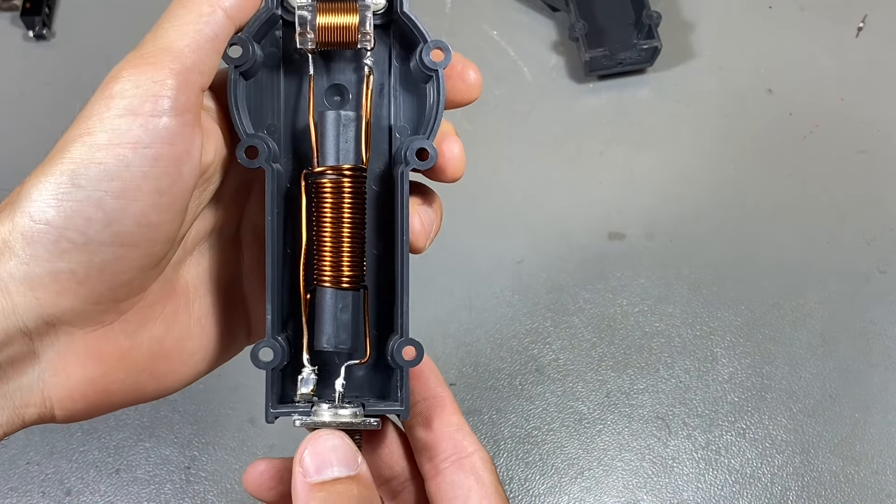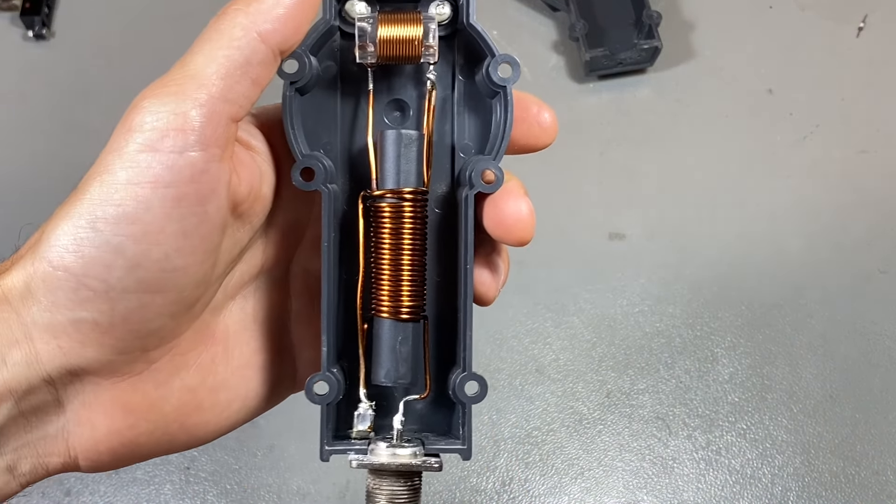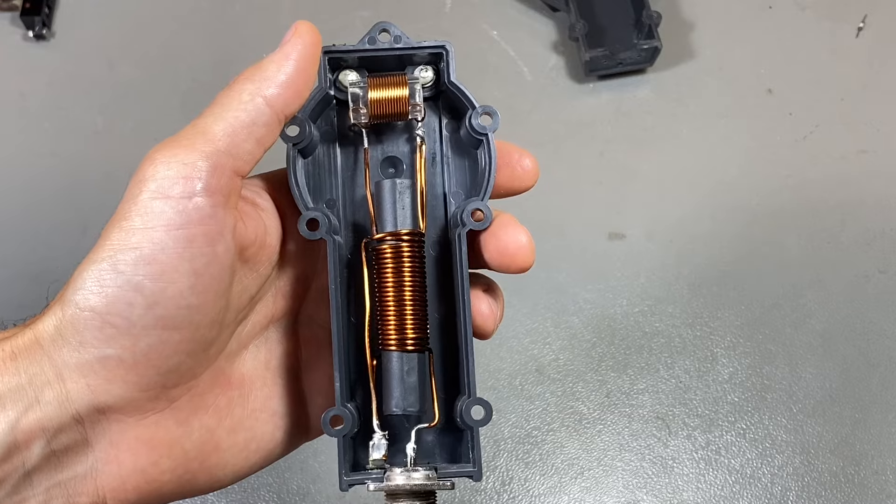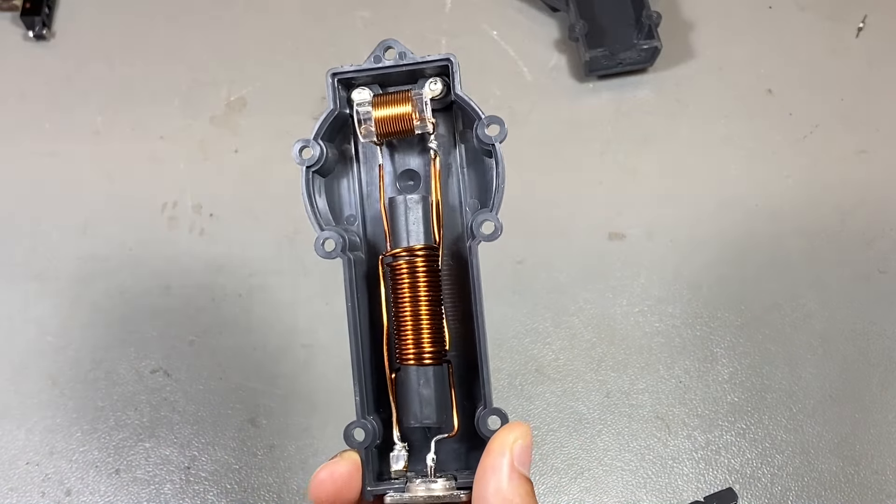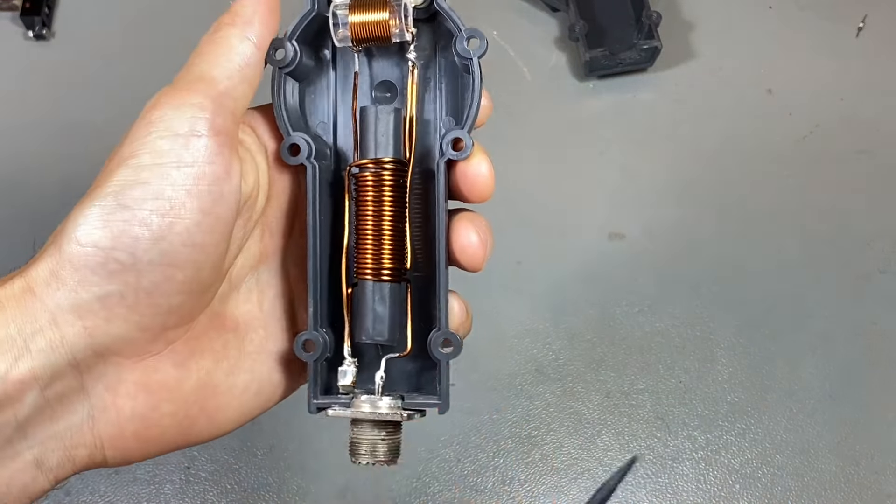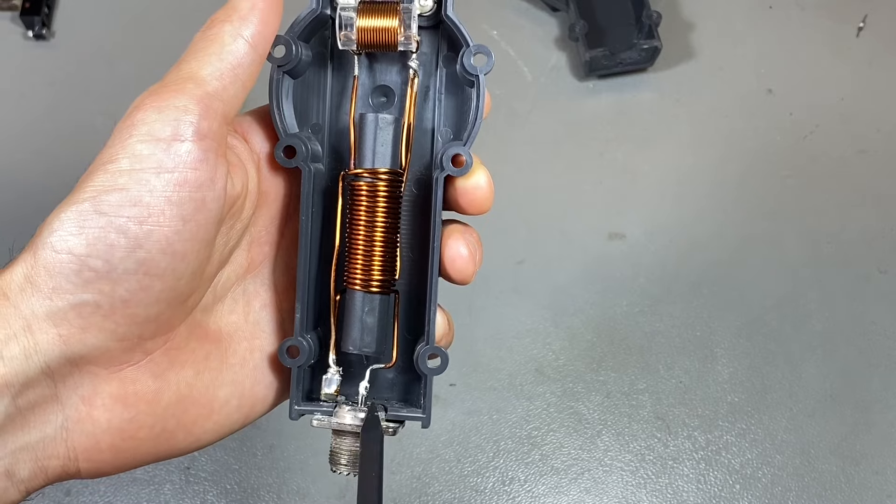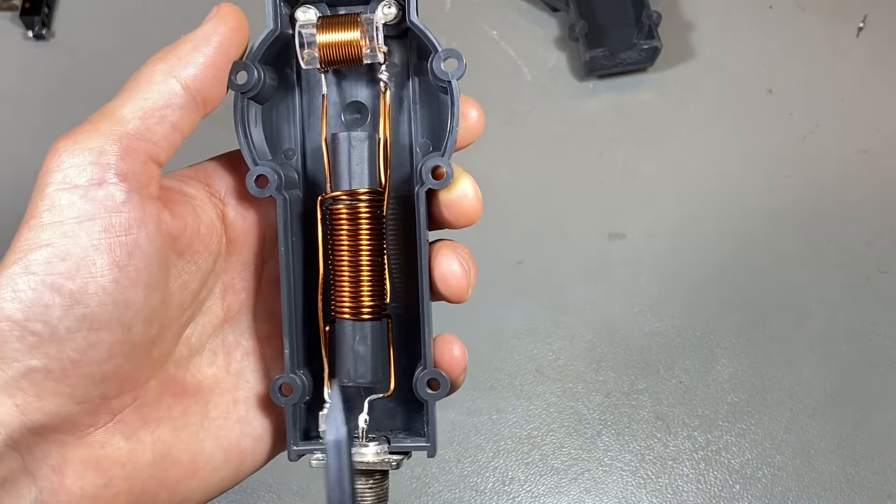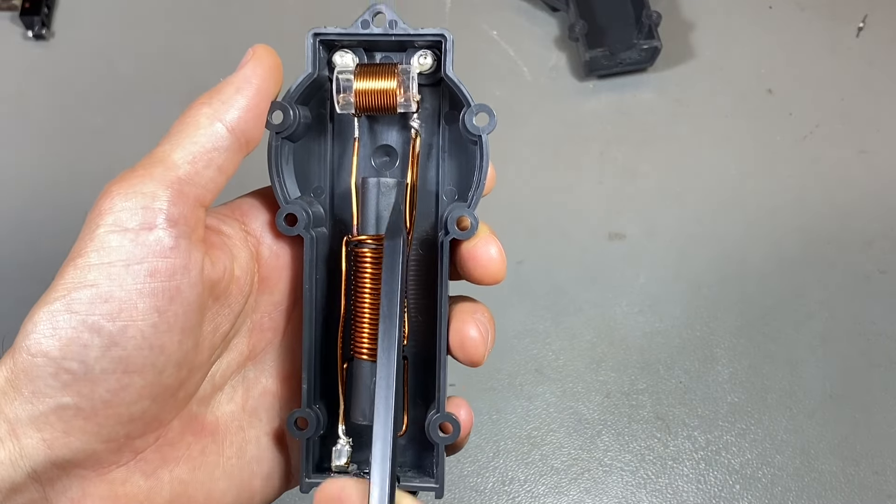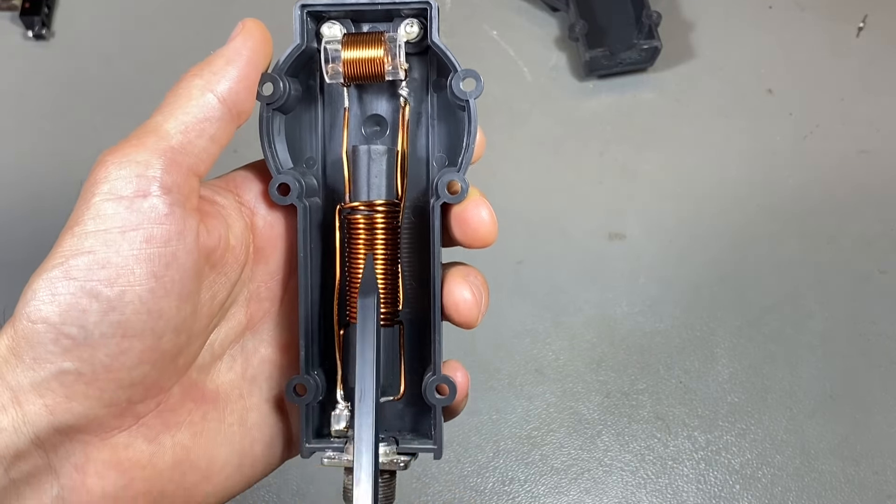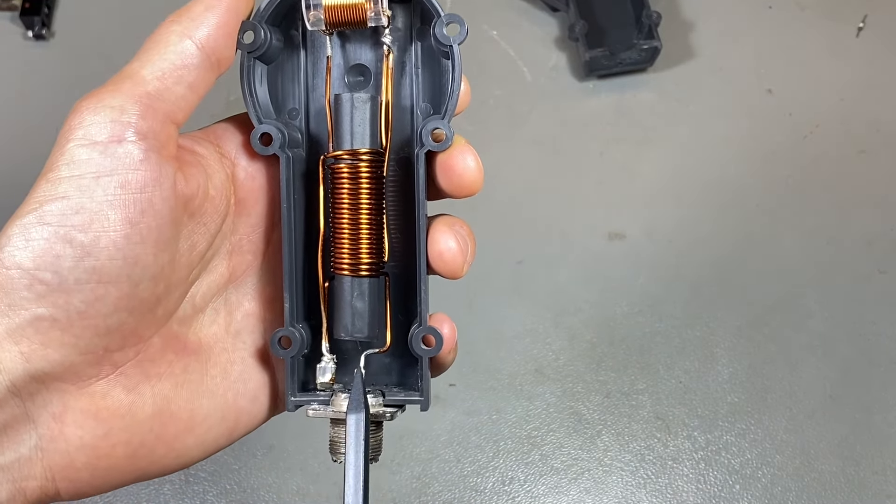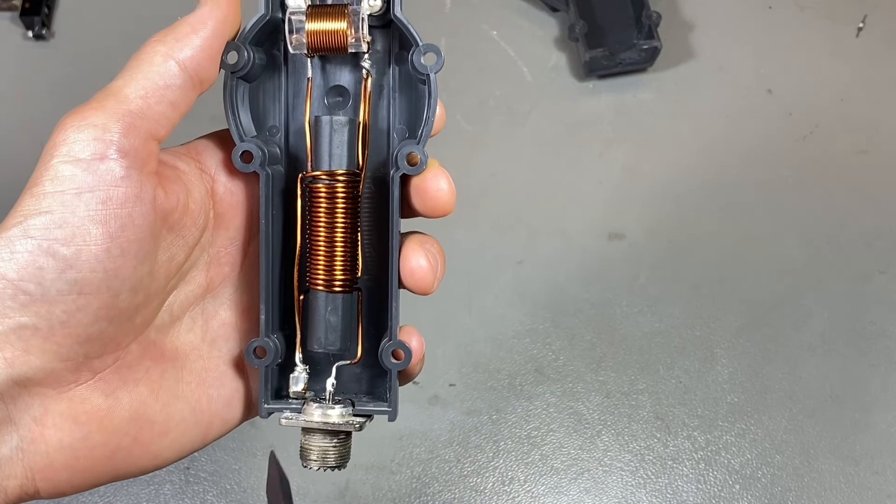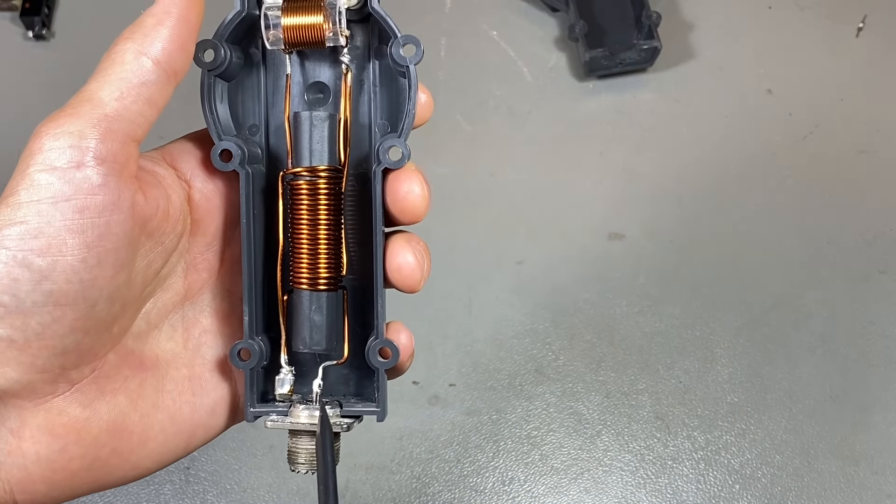So we can see that this is a voltage balun. It's a tri-filar, three-wire windings over this rod. And the model is the Ruthroff voltage balun.